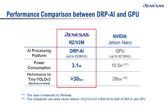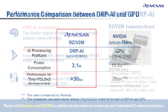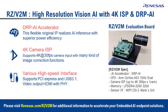Clearly, when it comes to high AI performance and superior power efficiency, RZV series MPUs deliver on both fronts, as demonstrated. Thanks to the DRP-AI accelerator, RZV2M has excellent performance for real-time AI inference and consumes a fraction of the power consumed by a GPU while performing identical tasks.